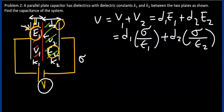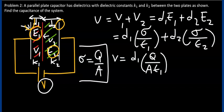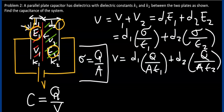And since surface charge density is the total charge divided by the area of the plates, we can substitute this expression to get D1·Q over A·ε1 plus D2·Q over A·ε2. Since capacitance is given by the ratio of charge over potential difference, we see that if we factor out the Q, we get the following: